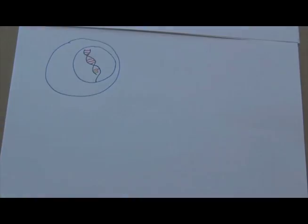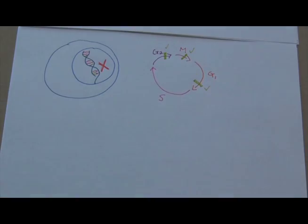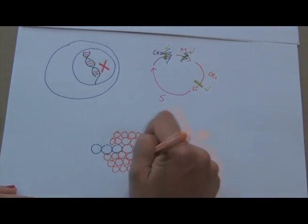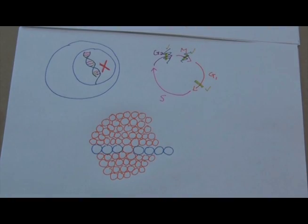Cancer occurs when a normal cell has a mutation that disrupts its cell cycle, giving it the ability to proliferate in an uncontrolled manner. This uncontrolled cell growth leads to the growth of a tumor, where each new cell contains the same defective DNA.